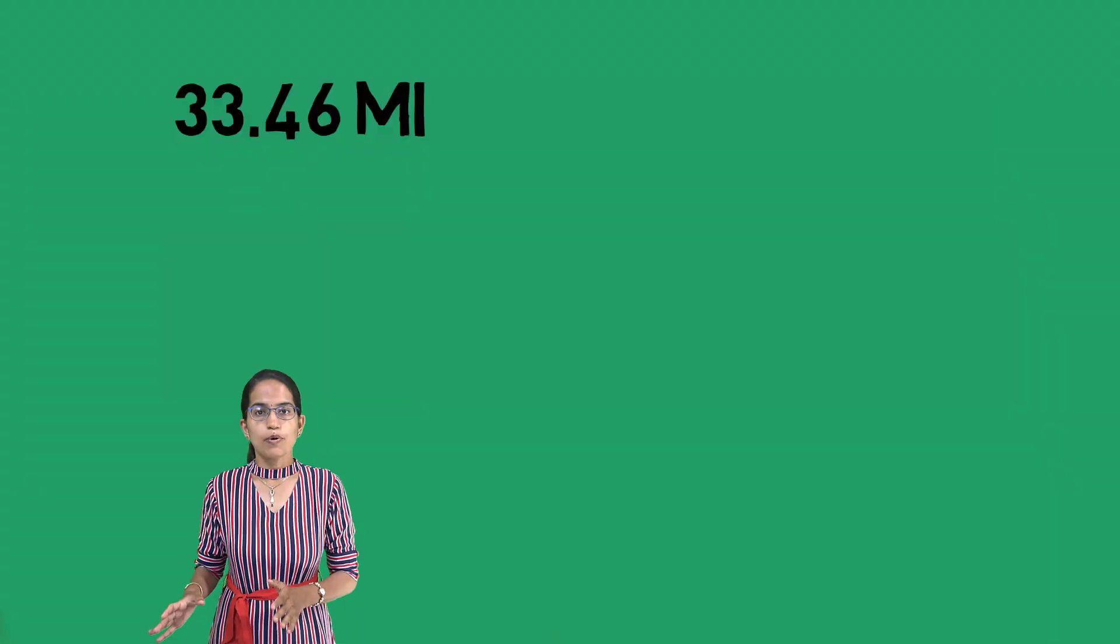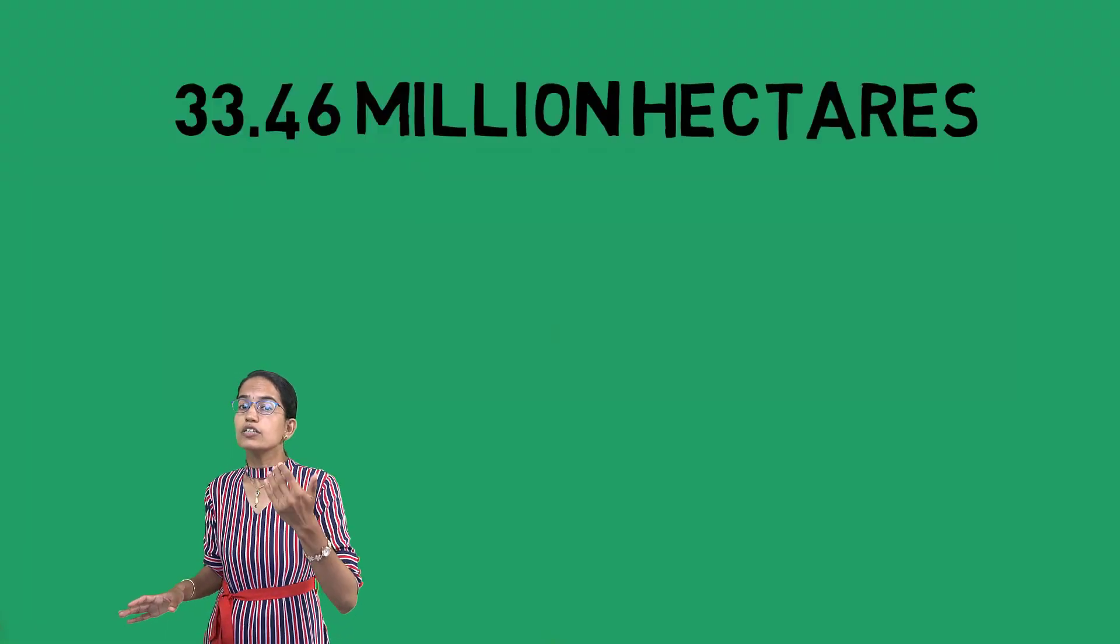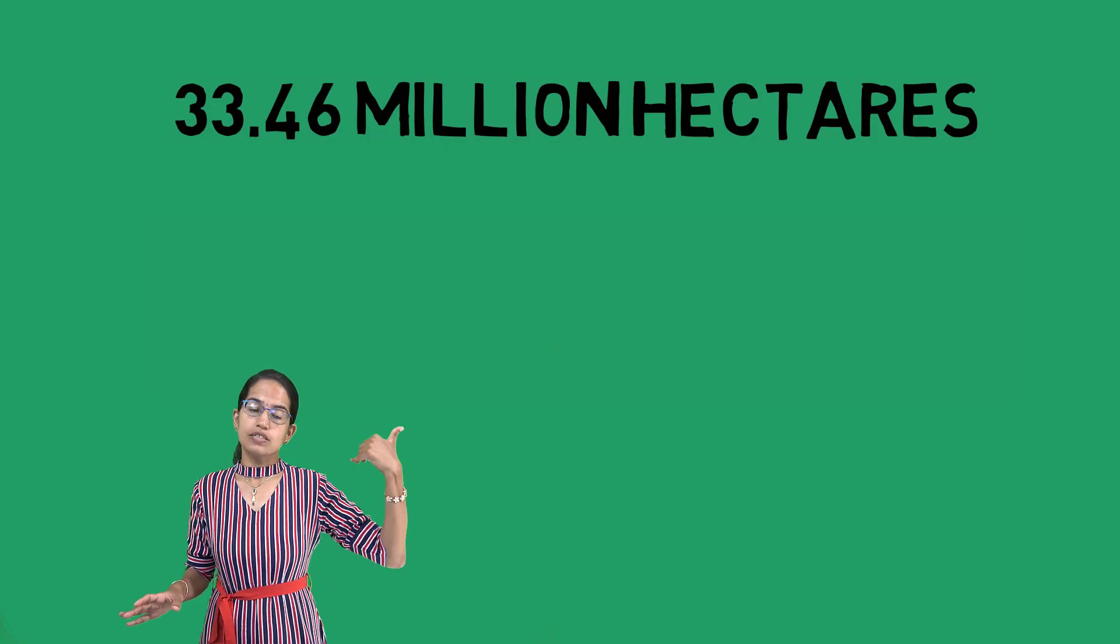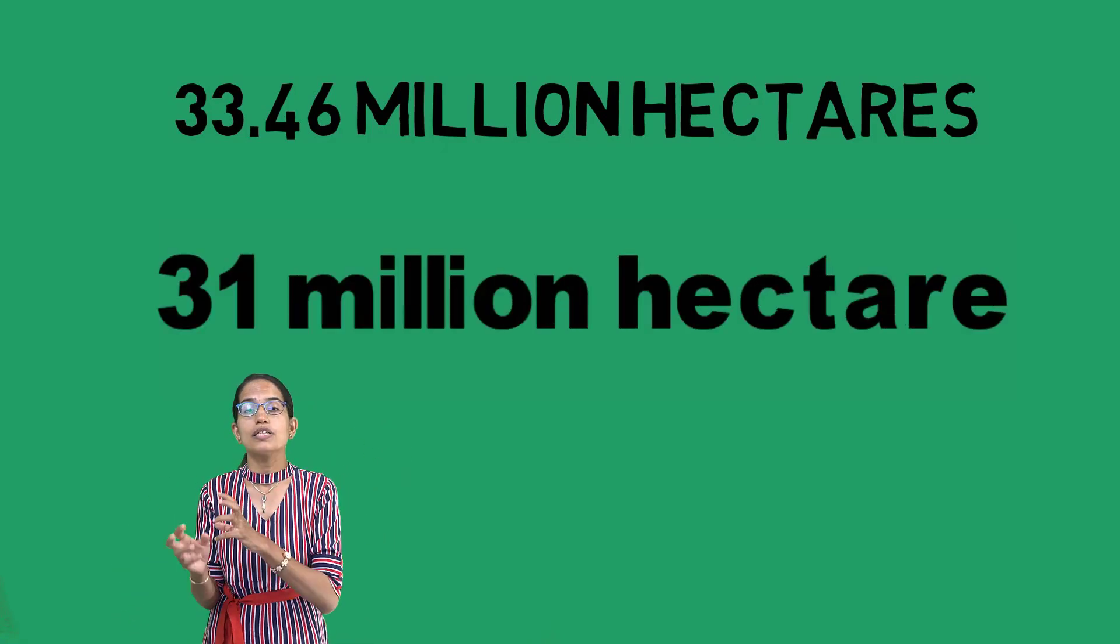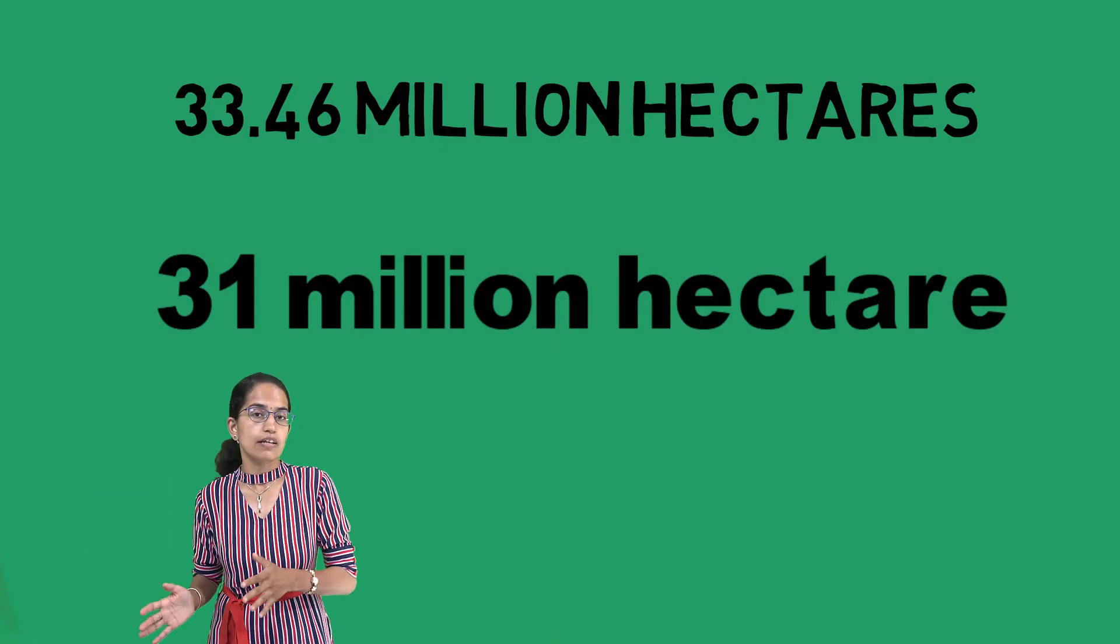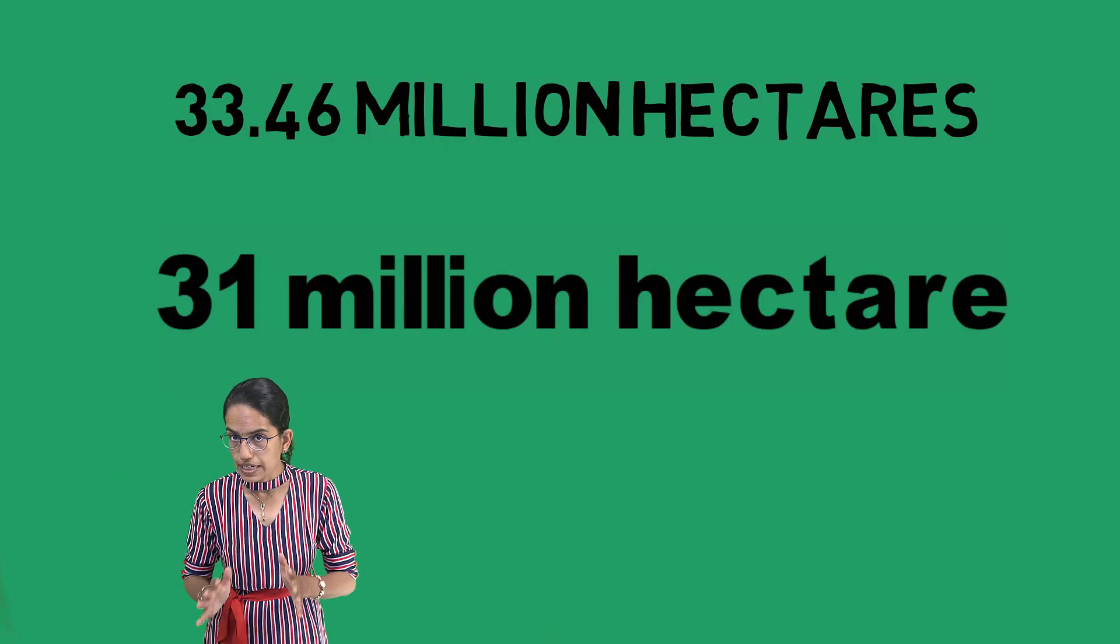But in terms of acreage, it is believed that in 21-22 India has an acreage of around 33.46 million hectares in contrast to the past year which was 31 million hectares. So there has been a surplus of nearly 111 million tons which is definitely high in terms of absolute acreage.